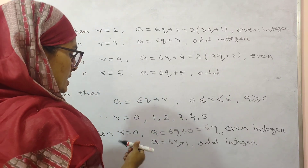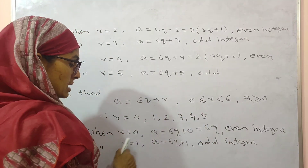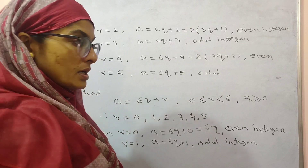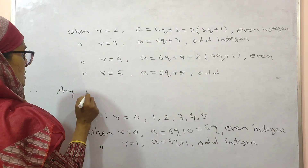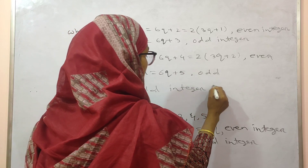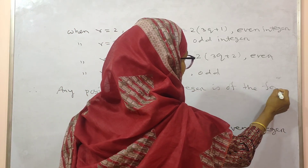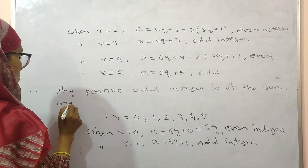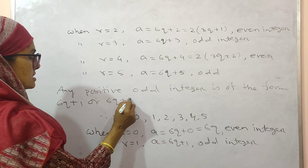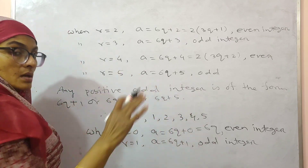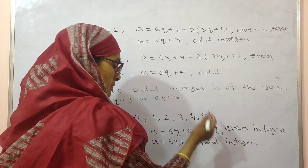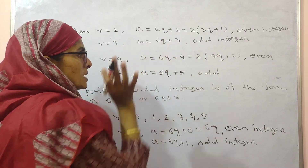So now, looking at the results: when r equals 0 you get even; when r equals 1 you get odd; when r equals 3 you get odd; and when r equals 5 you get odd. Therefore, any positive odd integer is of the form 6q plus 1, or 6q plus 3, or 6q plus 5. Note: if you had to write a positive even integer, it would be in the form 6q, 6q plus 2, or 6q plus 4.